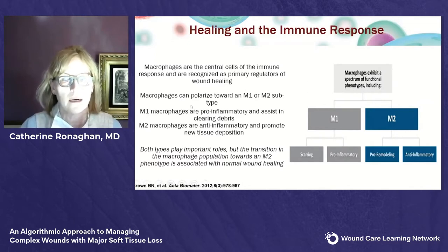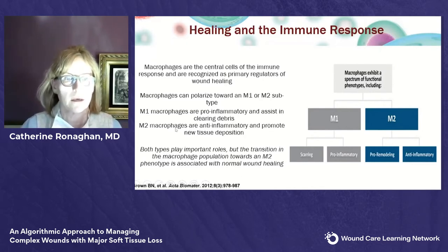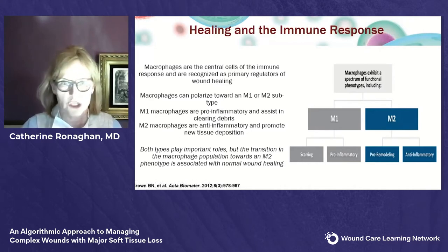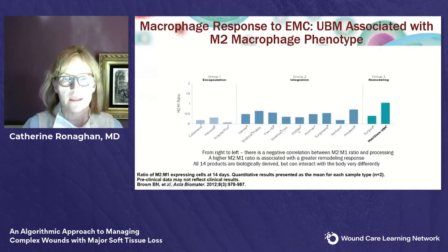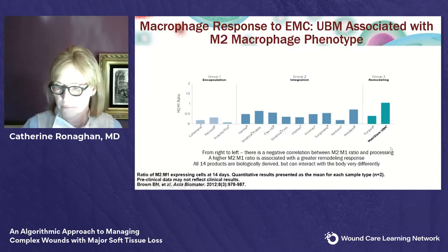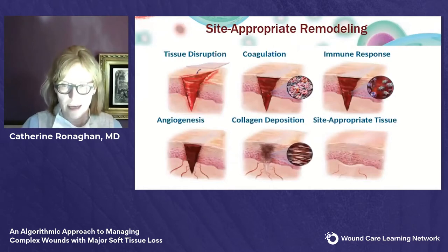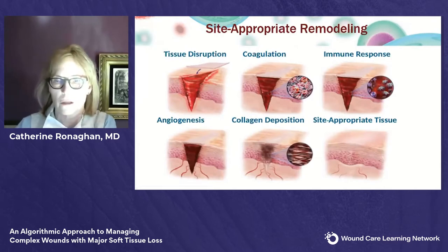As far as the healing and immune response, UBM will actually encourage M2 subtype macrophage polarization. The M1 macrophages help clear the area, but the M2 macrophages are anti-inflammatory and promote new tissue deposition. Looking at various xenografts, Surgisis and MatriStem are the only ones with a higher M2 to M1 ratio, with the UBM being significantly higher than Surgisis. We want site-appropriate tissue deposition and constructive remodeling rather than scarring.